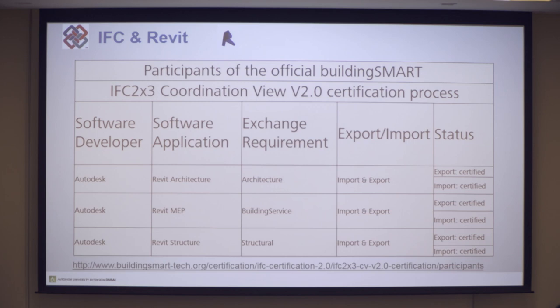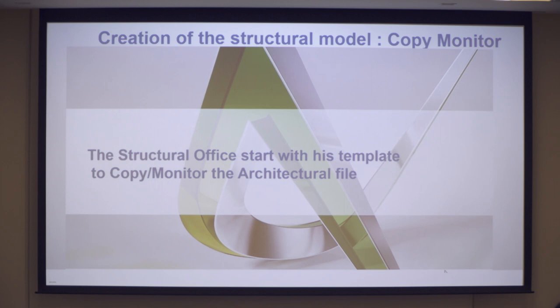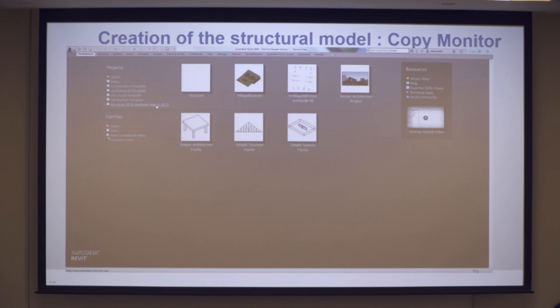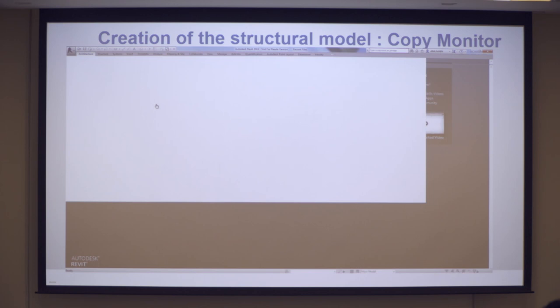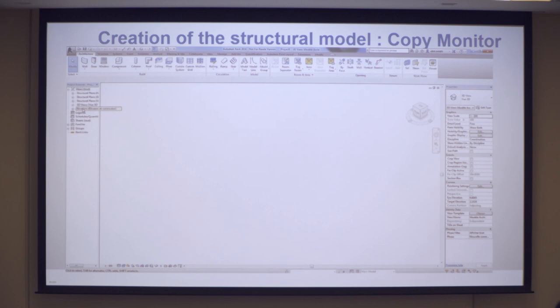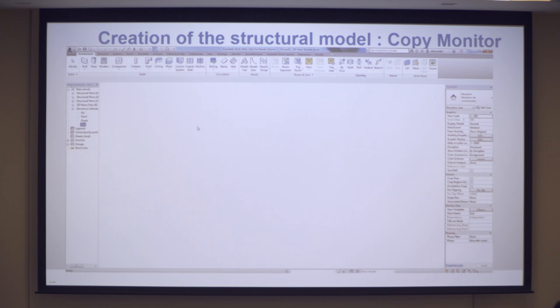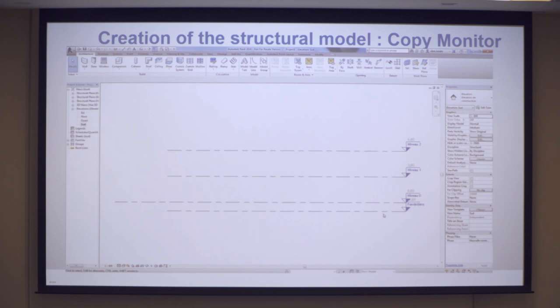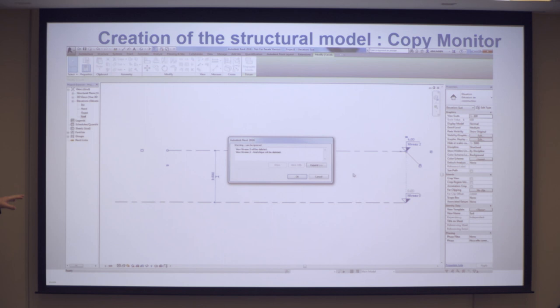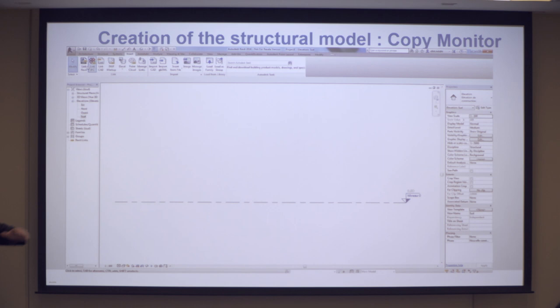Revit is certified IFC 2.3, Revit architecture and Revit structure. What I like in copy-monitor is that you start with your own template — the structure template, your own template — and after you link the architectural file. In your own template you have all the families and the tools to do your job. You don't need levels because you will pick the level of the architect — you just need one.